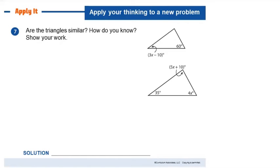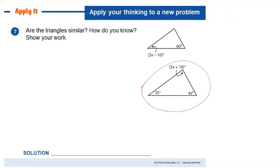This is your i-Ready book. It asks: are the triangles similar? How do you know? The first thing to realize is the X's in the bottom triangle are not necessarily the same as the X's in the top triangle — I have to solve for X in the bottom triangle first. There's not enough information in the top triangle to figure it out directly.